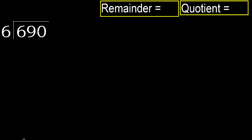690 divided by 6. 6 is not less, therefore with 6. 6 multiplied by which number is nearest to 6 but not greater?